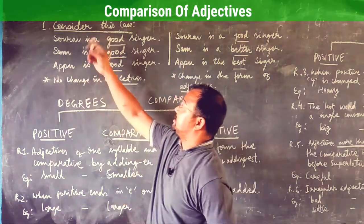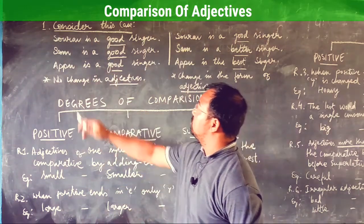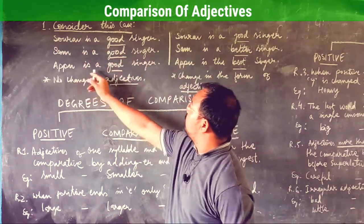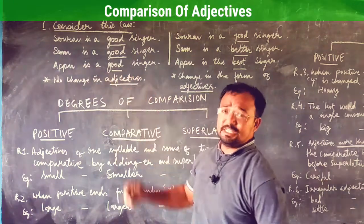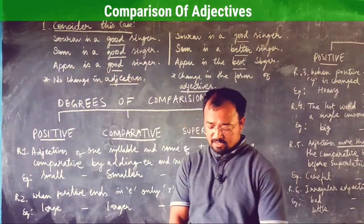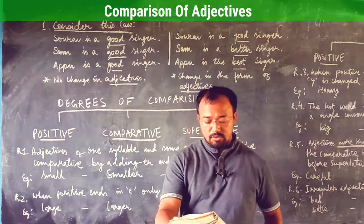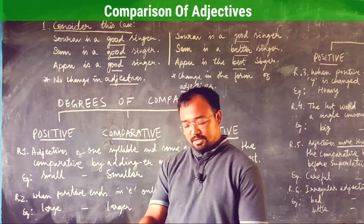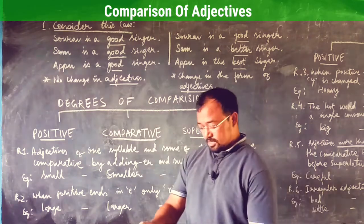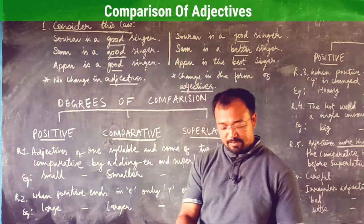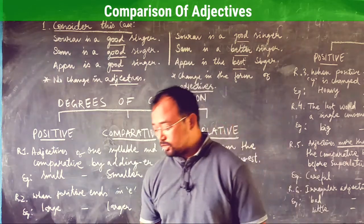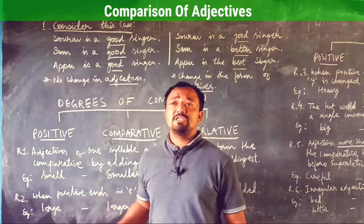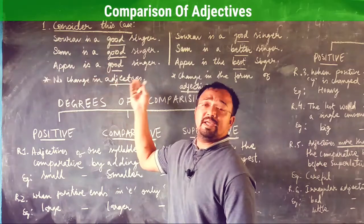Consider this case: Saurabh is a good singer, Sam is a good singer, Appu is a good singer. There is no change in the adjectives. Although they are all good singers, none is a bad singer, but they may not be equally good in singing. A comparison of the art of singing helps us to express the difference among them.